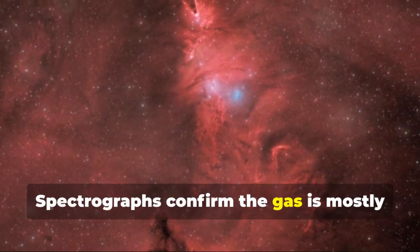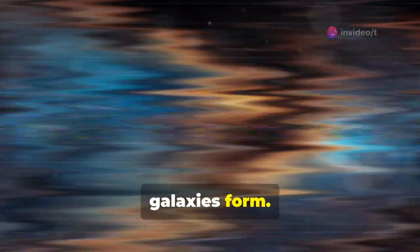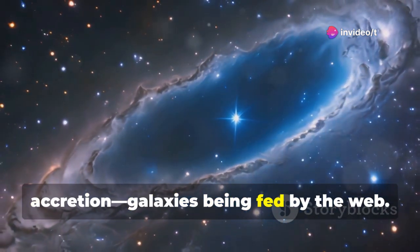Spectrographs confirm the gas is mostly hydrogen and helium, flowing toward denser nodes, where galaxies form. This is direct evidence of cosmic accretion, galaxies being fed by the web.